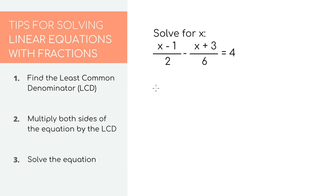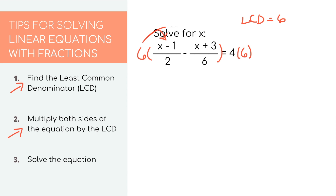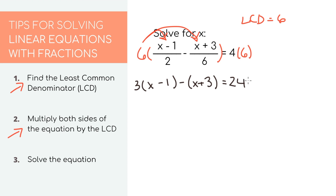Here we have an equation with two fractions, so it's worthwhile to find the LCD. Looking at the denominators 2 and 6, since 6 is actually a multiple of 2, our LCD is 6. For step two, let's multiply both sides of the equation by 6. On the left side, we need to distribute: 6 times (X minus 1) over 2 — the 6 and 2 reduce to just 3, bringing down (X minus 1). Don't forget the parentheses. Then 6 times negative (X plus 3) divided by 6 — the 6s cancel, bringing down (X plus 3). On the right side, 4 times 6 equals 24.